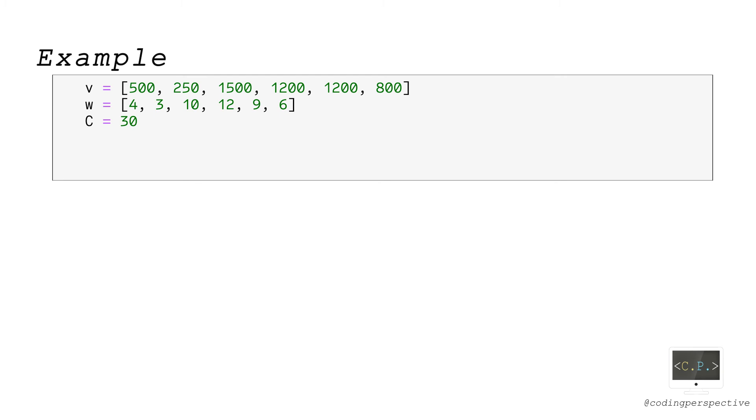Values v are the profits of the projects, weights w are the days required to complete each project. As the projects are due in a month, the capacity of capital C is 30 days.